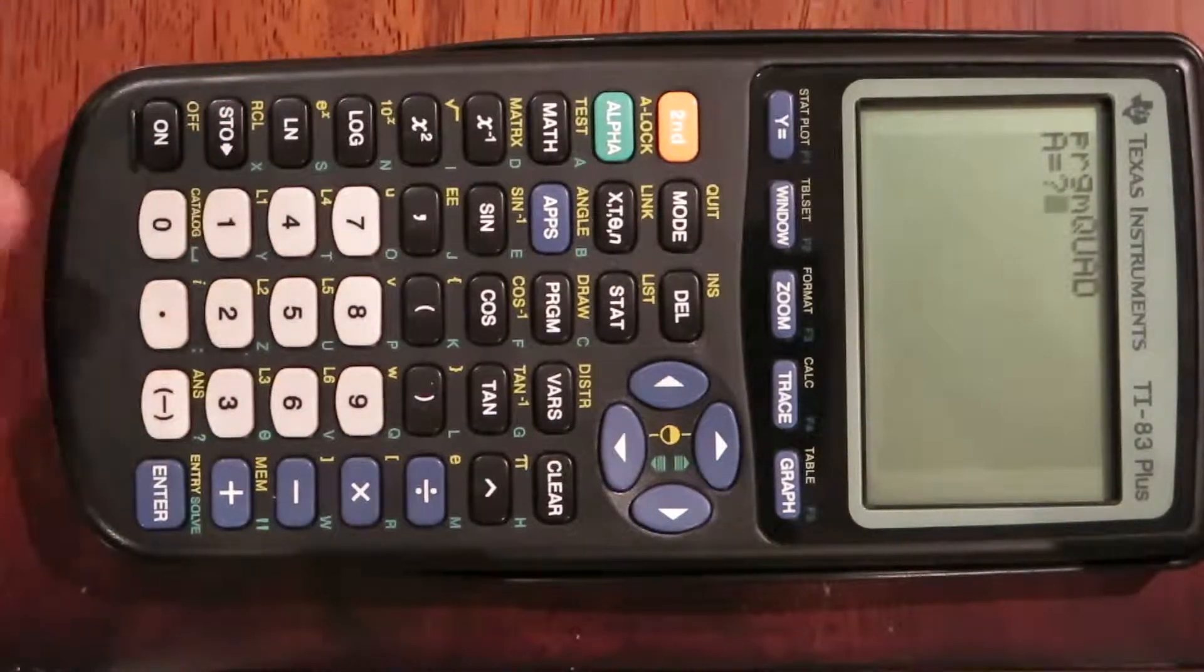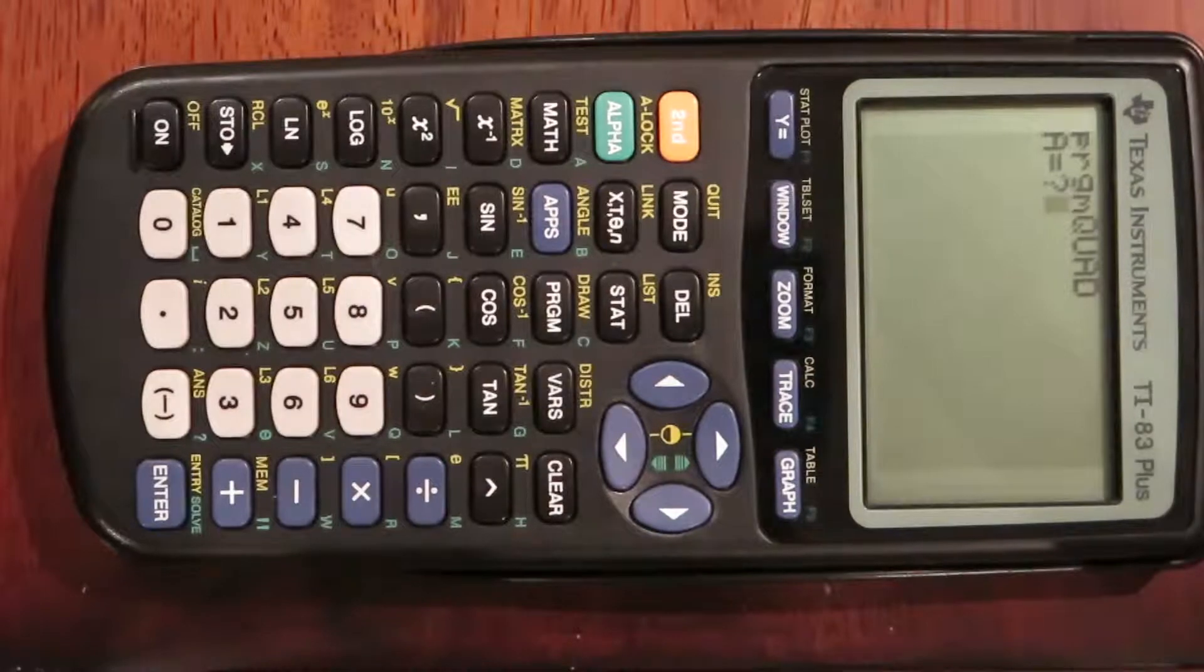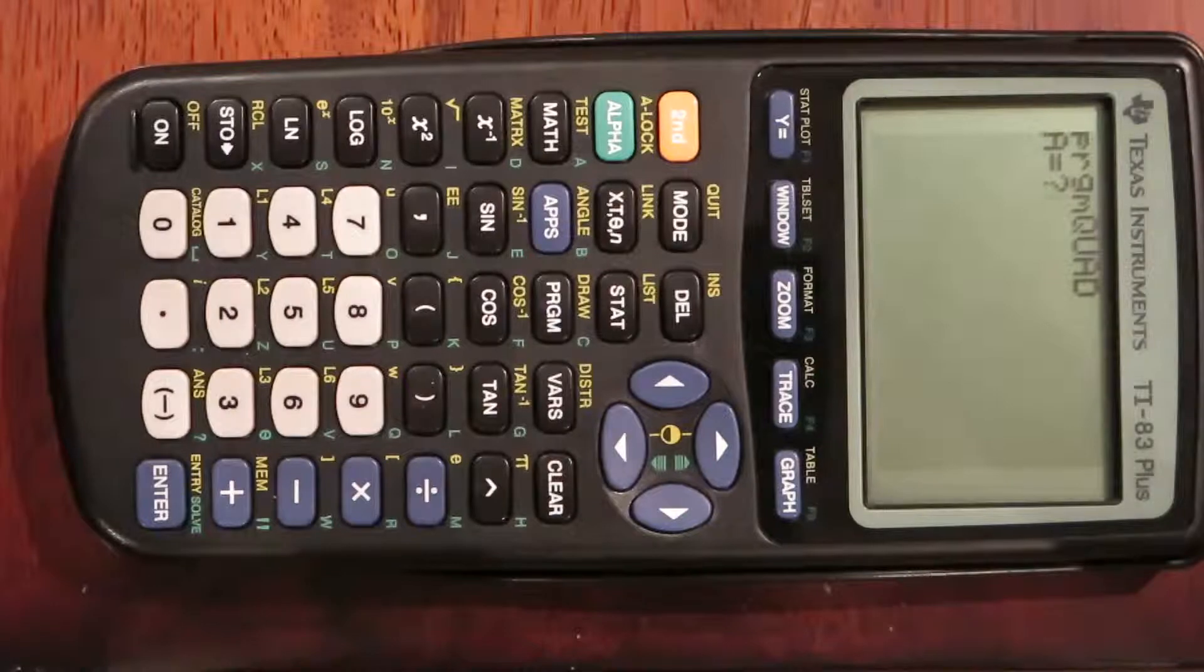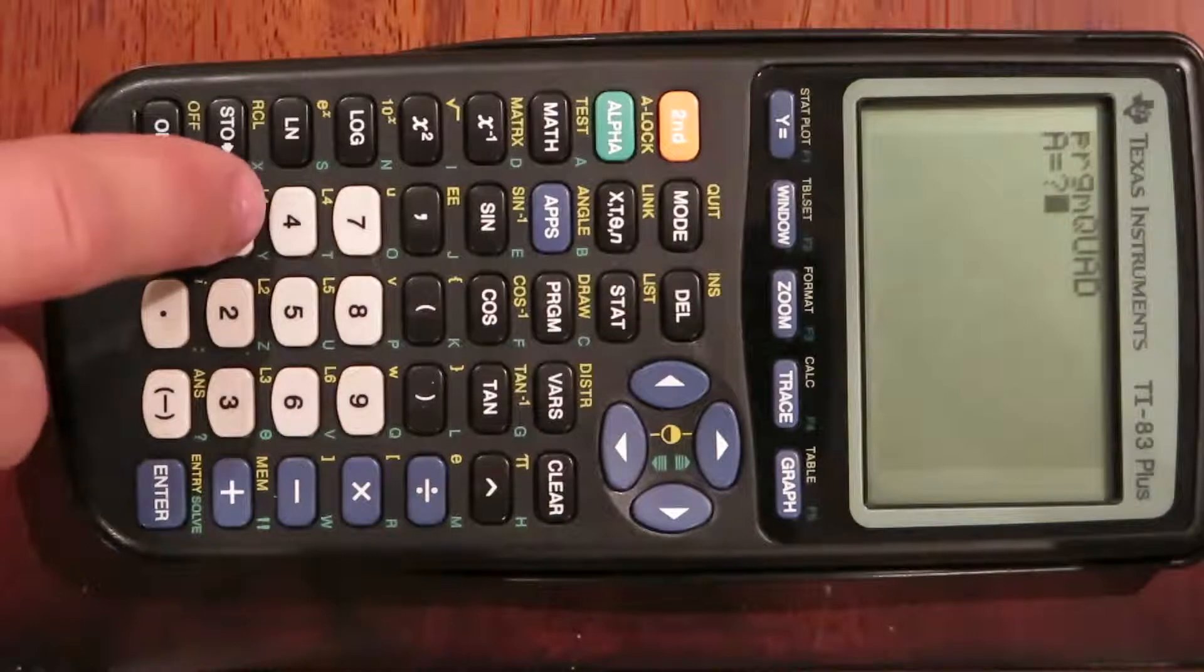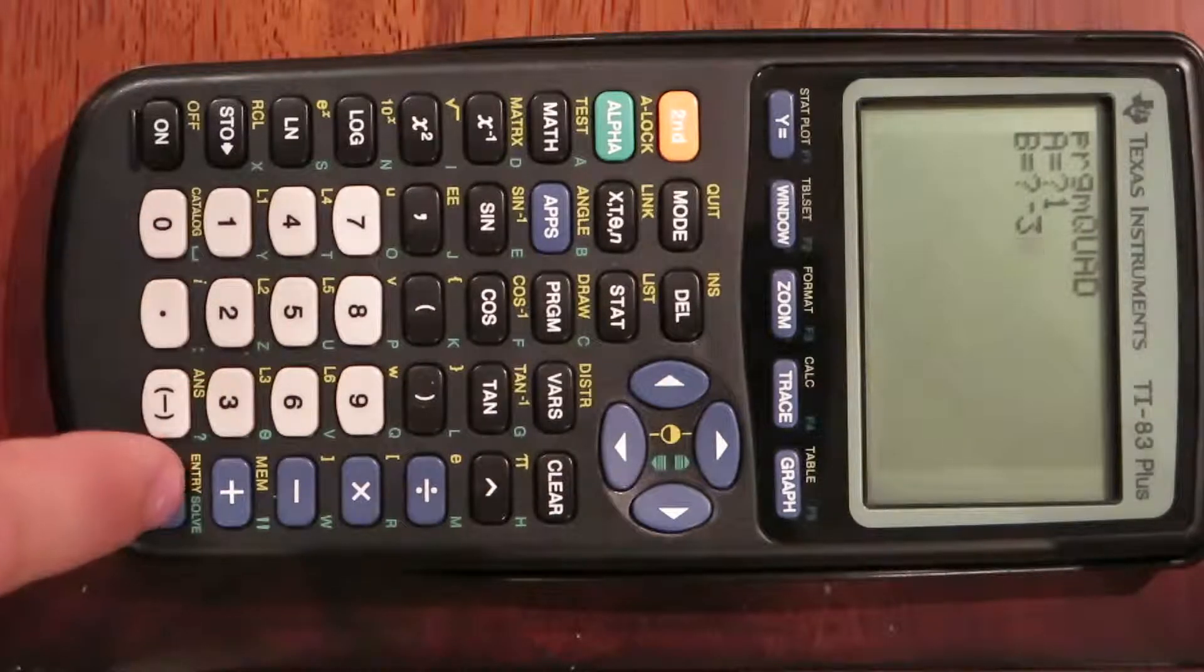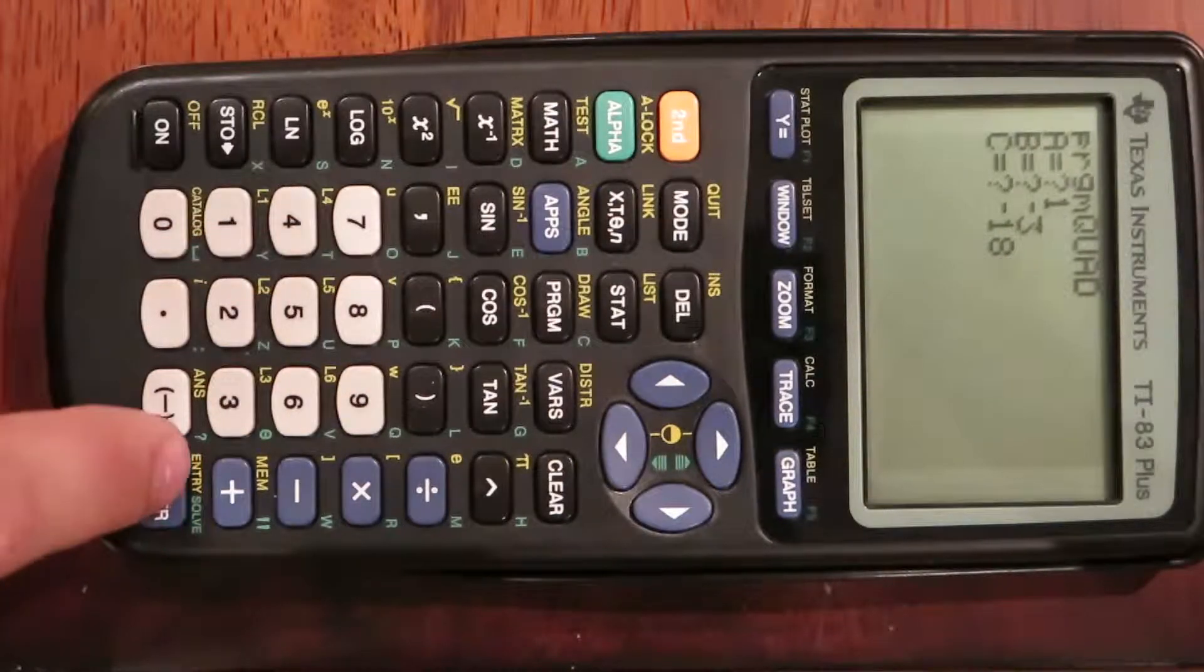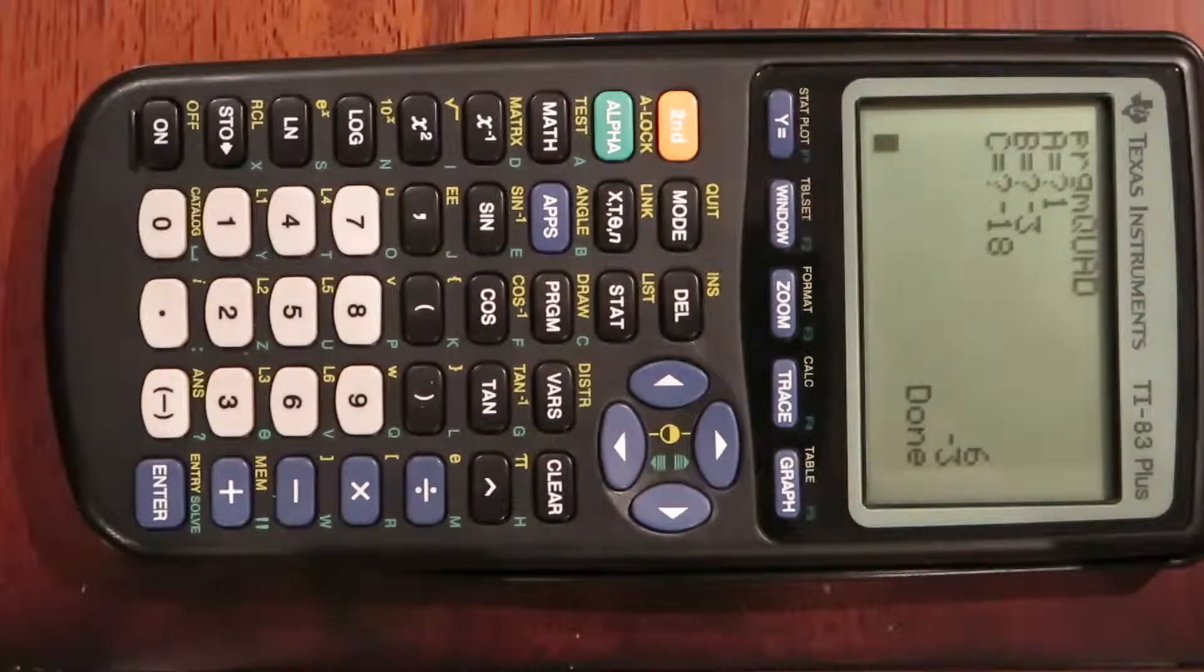Say our problem is x squared minus 3x minus 18. This problem is easily factored, but just to test it out. A would be 1 because there's no coefficient, enter. B is negative 3, enter. C is negative 18, enter. It will plug all those variables in, and we get 6 and negative 3.